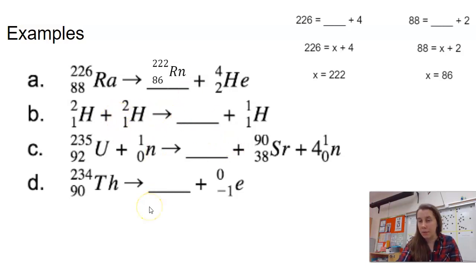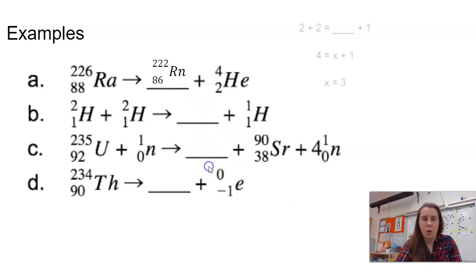I'm going to go through the rest of these relatively quickly. If you feel comfortable with this, I would recommend pausing and trying them yourself, then check your work. For this one, our numbers are smaller—this is a fusion reaction. We have 2 plus 2 on one side, and something plus 1 on the other, so x equals 3 for our mass. For the bottom number, we have 1 and 1, and then something and 1, so our bottom number is going to be 1. The element that is number 1 is hydrogen, so that will be our product there.